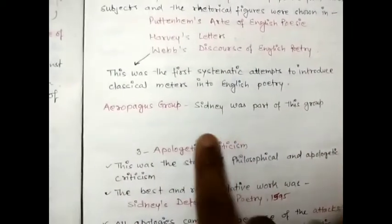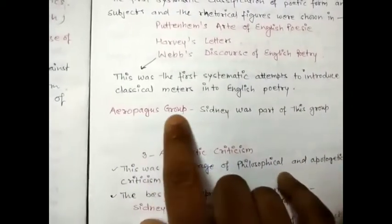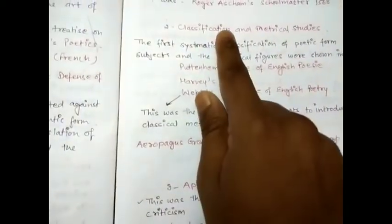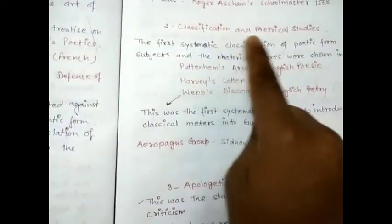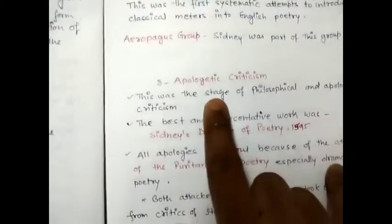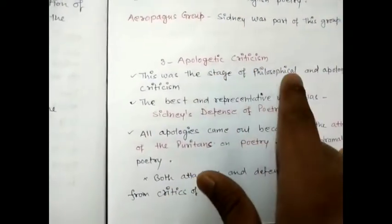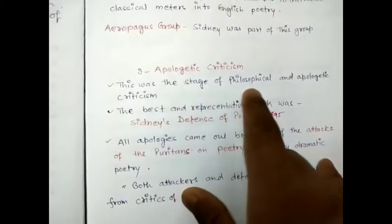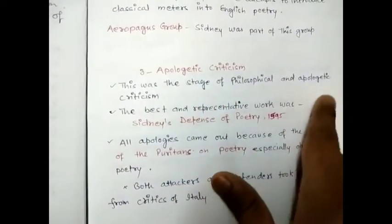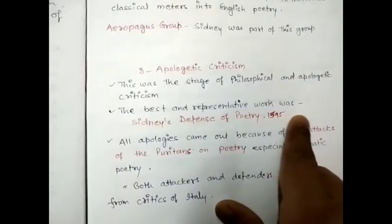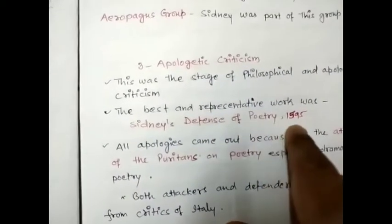The Aeropagus group — Sidney was part of this group — falls under Classification and Metrical Studies. The third phase was Apologetic Criticism, or Philosophical and Apologetic Criticism. The best and most representative work of this stage was Sidney's Defense of Poetry.